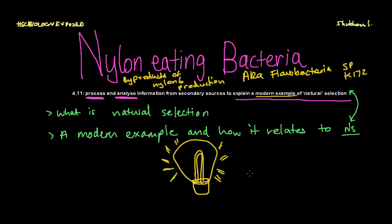Hey, today I'm going to be talking about nylon-eating bacteria, which is a part of dot point 4.11, which says process and analyse information from secondary sources to explain a modern example of natural selection. Cool, so let's just deconstruct this dot point first.